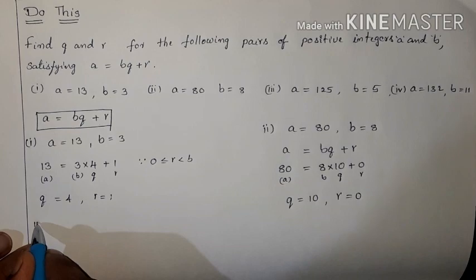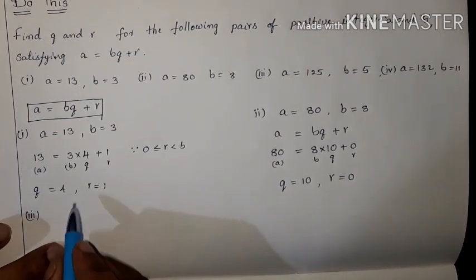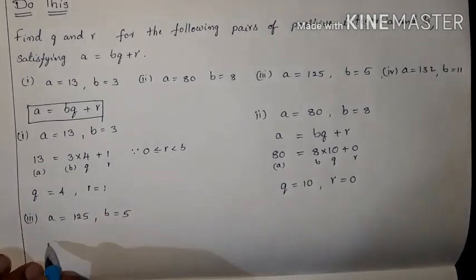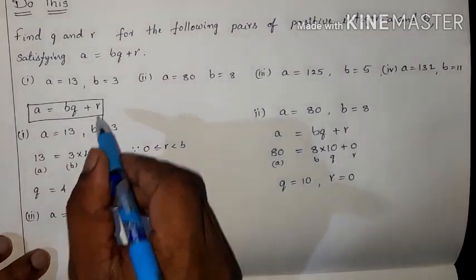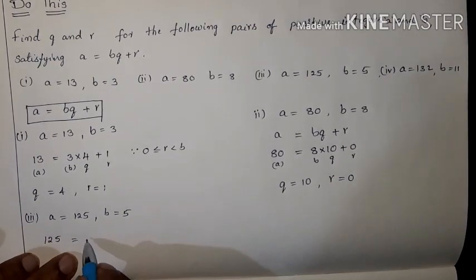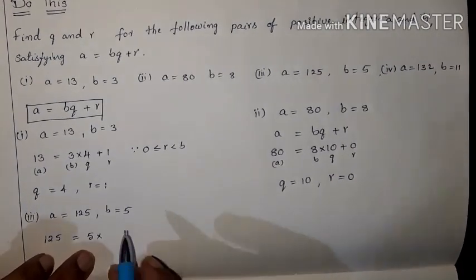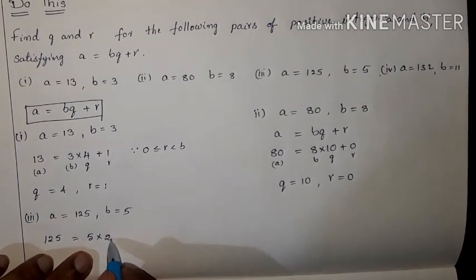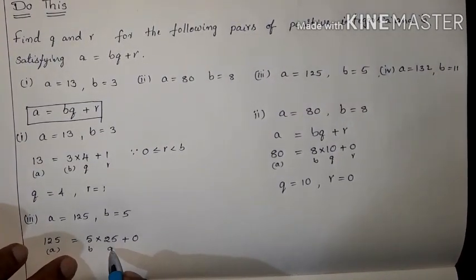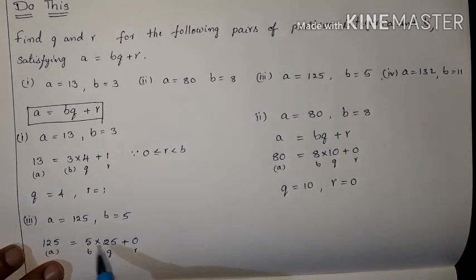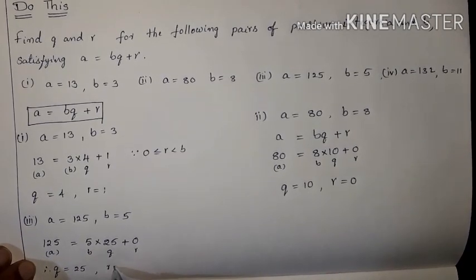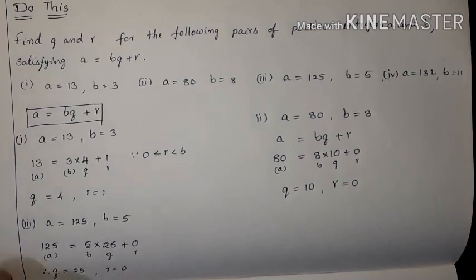Third one: A is equal to 125 and B is equal to 5. Condition A equals BQ plus R. So 125 equals 5 into 25 plus 0. Therefore Q is equal to 25 and R is equal to 0.